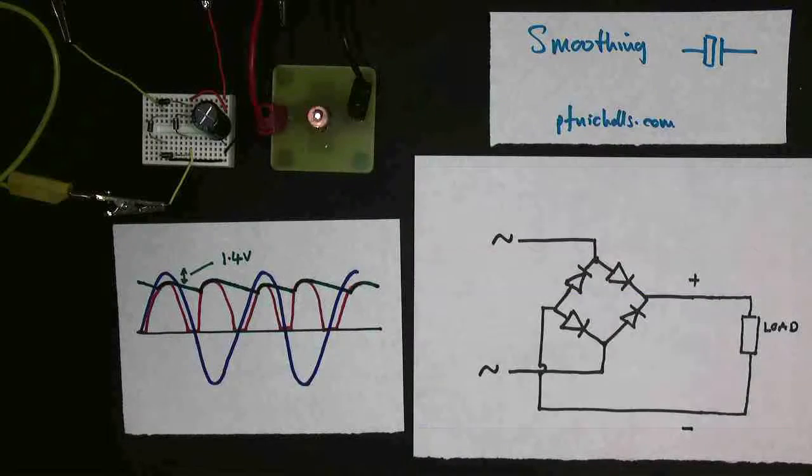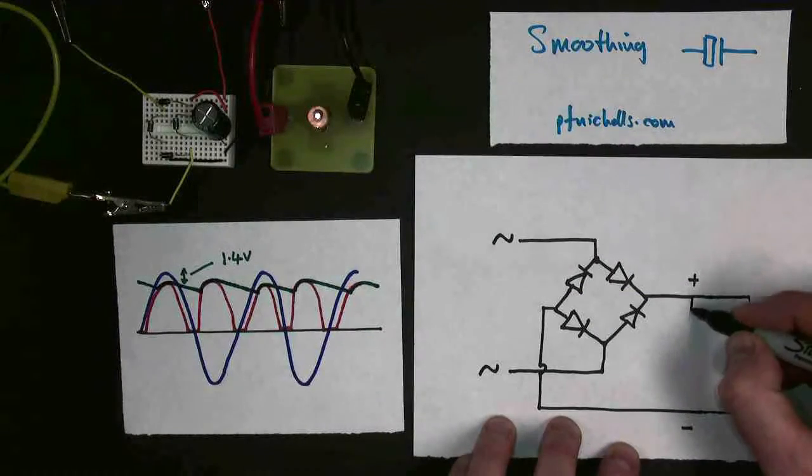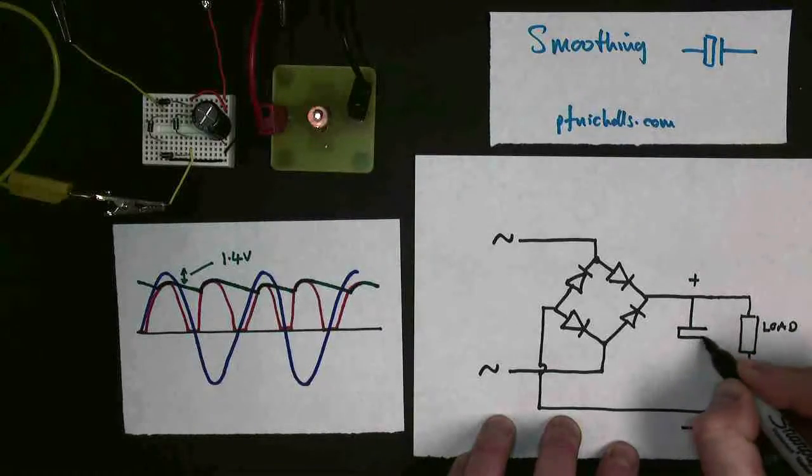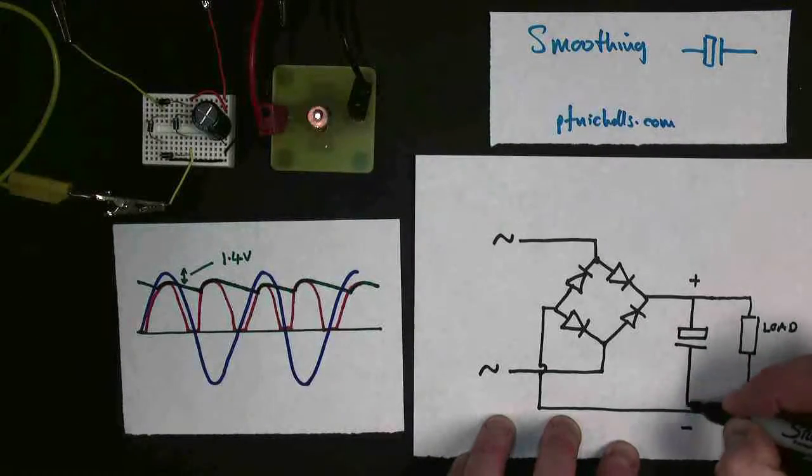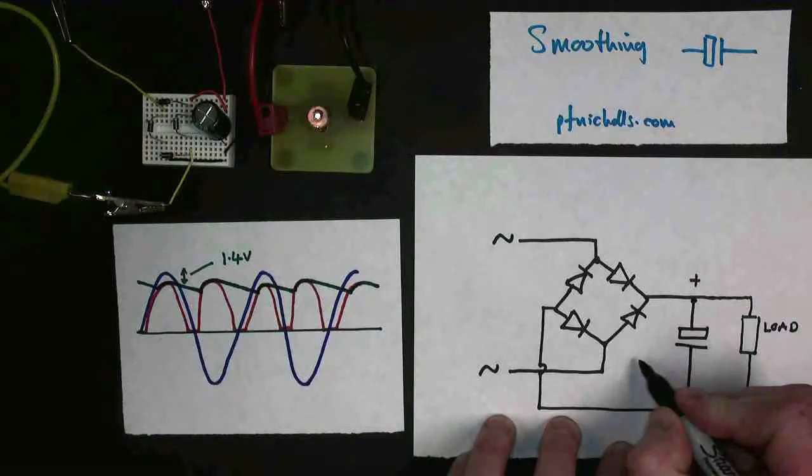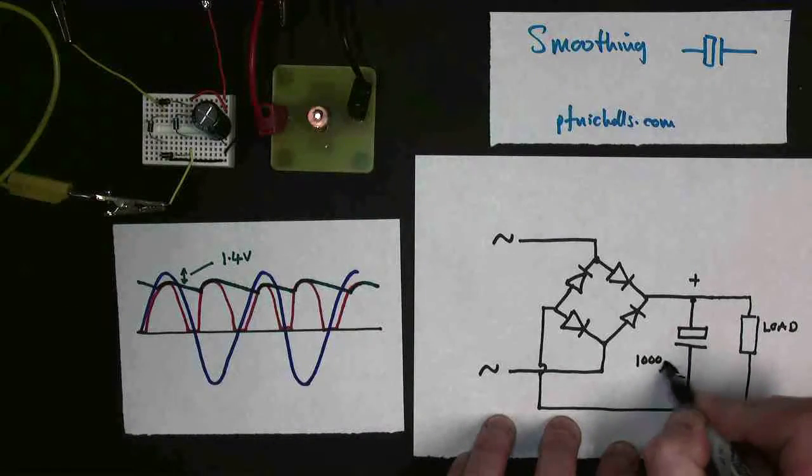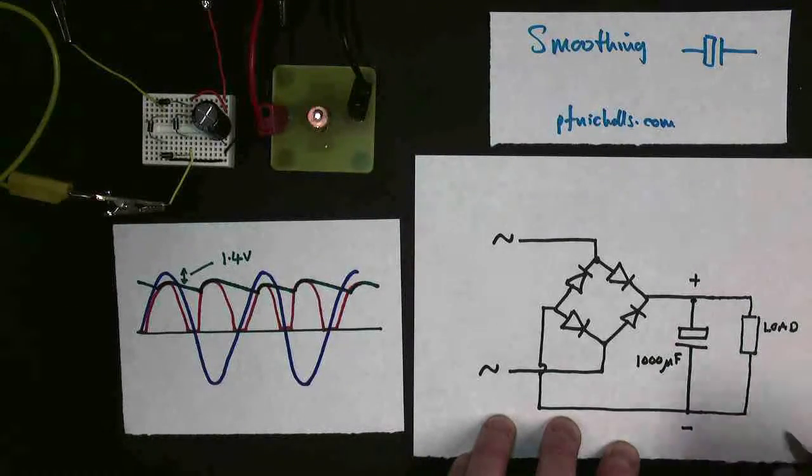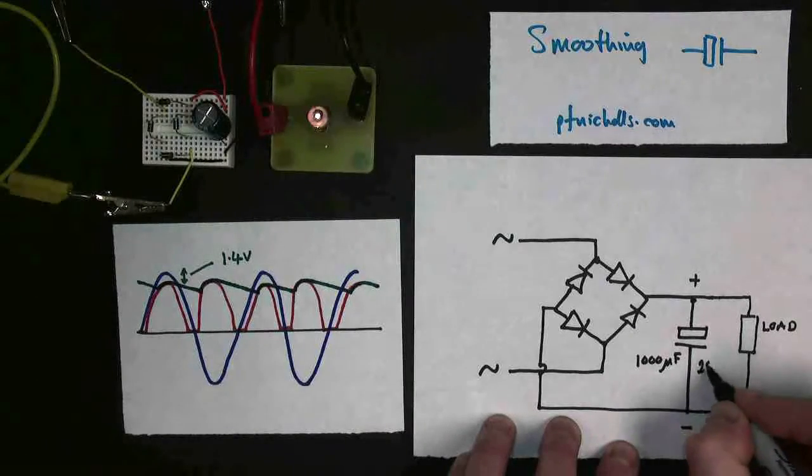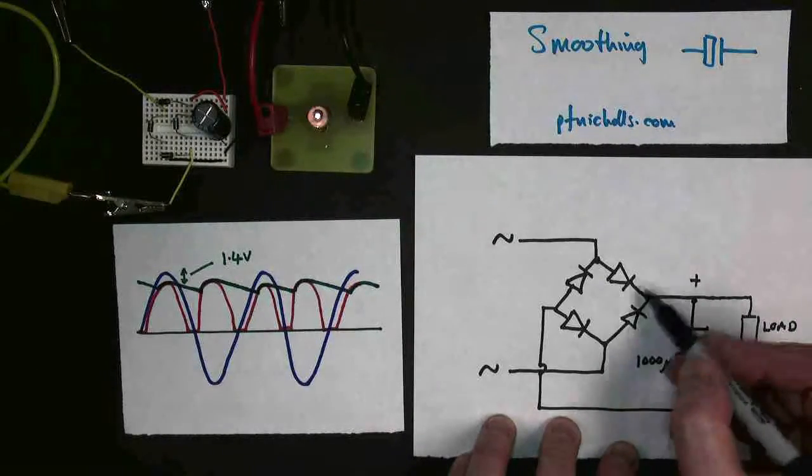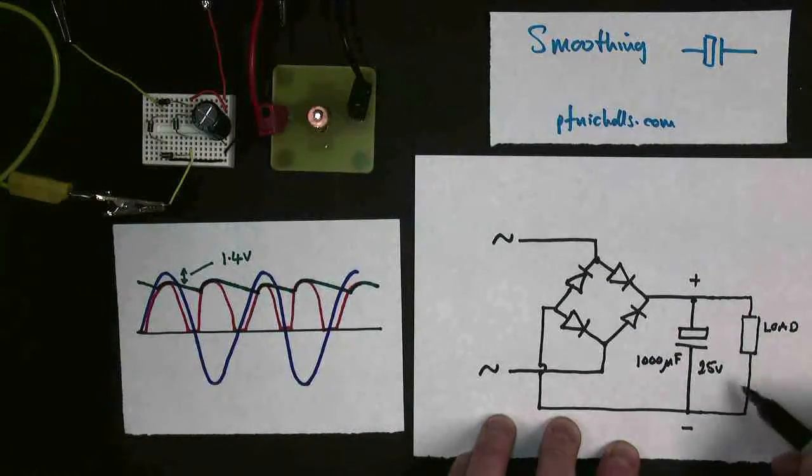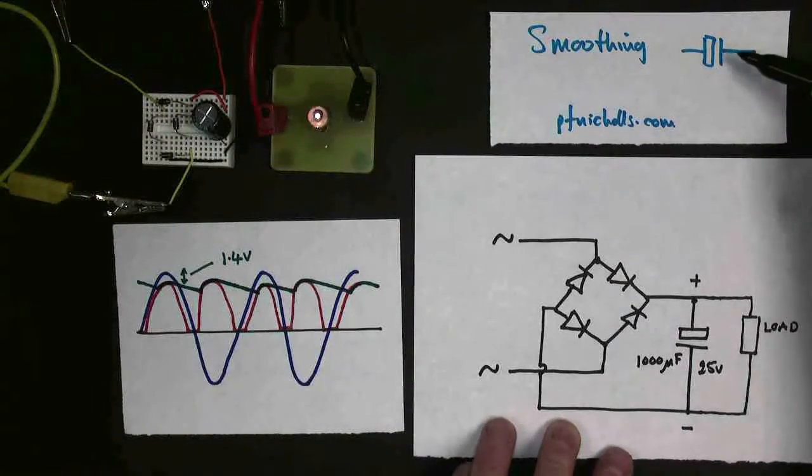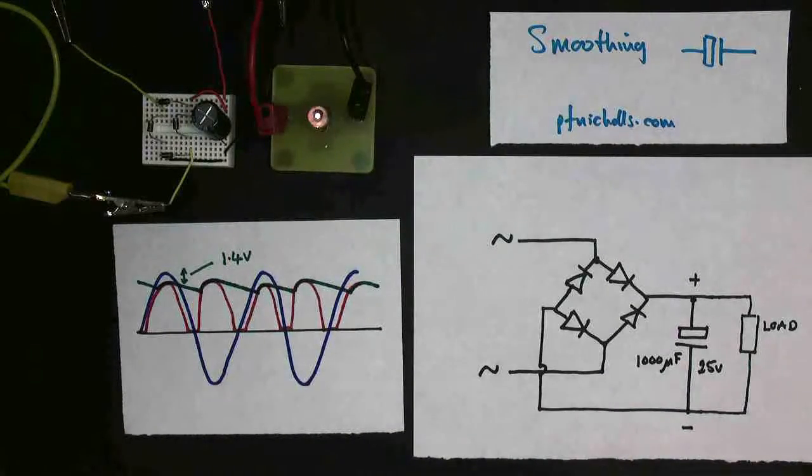So if I go back to my bridge rectifier now, what I've done is added a capacitor in parallel with my load. And it wants to be a big value, so many thousands of microfarads. It wants to be a suitably high voltage, so at least as much as the voltage that you're using across your load. And that's called smoothing. We use a capacitor to smooth our supply. It doesn't make it perfectly flat, but it's not bad.